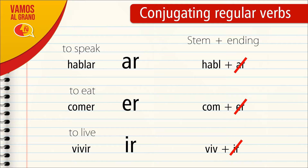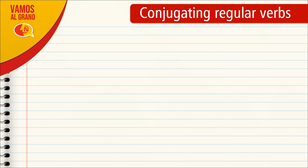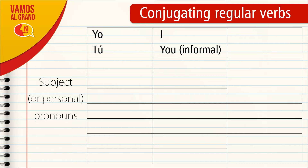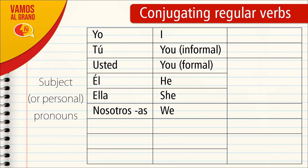Before we go into the conjugation of the verbs, let me remind you what the subject pronouns or personal pronouns are in Spanish. The subject pronouns are: Yo, which means I; Tú, which means you, used informally; Usted, which means you, used formally; Él, which means he; Ella, which means she; Nosotros or Nosotras, which means we; and Vosotros or Vosotras, which is a plural form of you mainly used in Spain — equivalent to 'you all' in English.